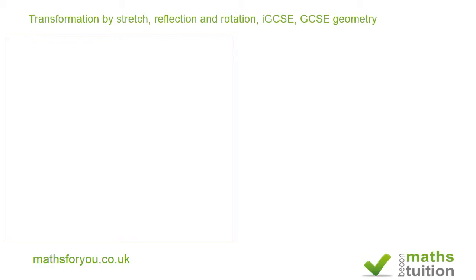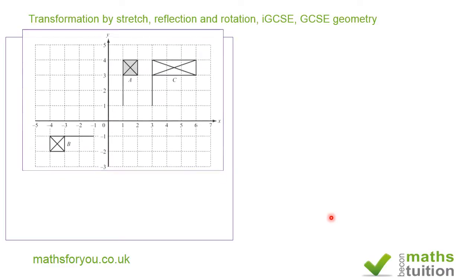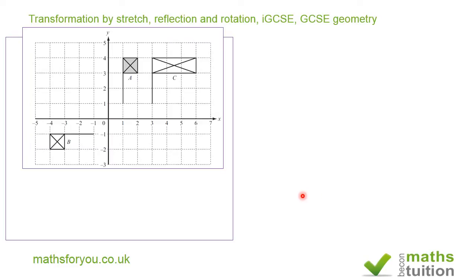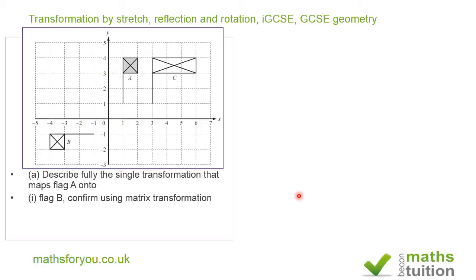Welcome to this exercise on transformation by stretch, reflection, and rotation, based on an IGCSE/GCSE geometry question. The diagram shows an object, flag A, and two images, flags B and C. We are asked to describe fully the single transformation that maps flag A onto flags B and C, and to use matrices to confirm our results.